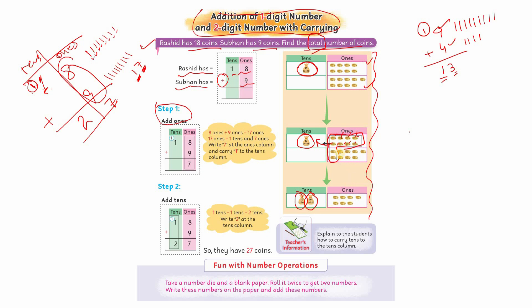ادھر seven coins رہ گئے اور two tens بن گئے: two لکھ دیا، seven لکھ دیا۔ Step-wise بھی دیکھ لیں: پہلے step میں add ones کیا، دوسرے step میں add tens کیا۔ اب ایک چھوٹی سی activity ہے جو آپ نے dice use کرتے ہوئے خود perform کرنی ہے۔